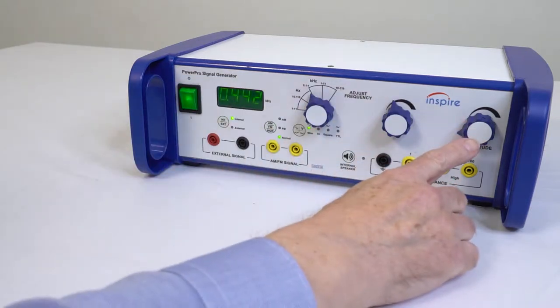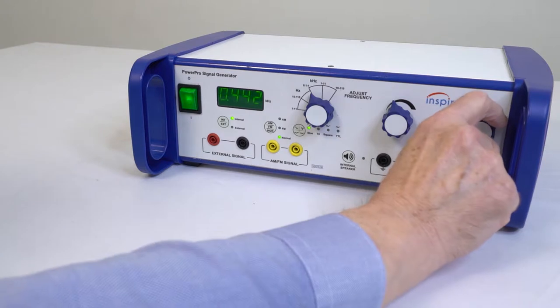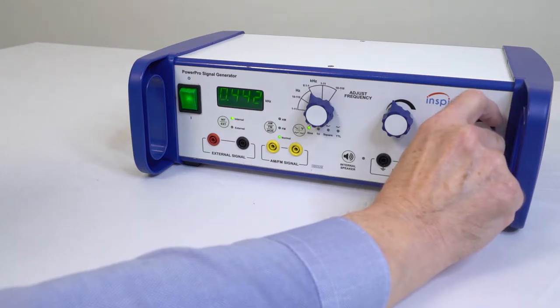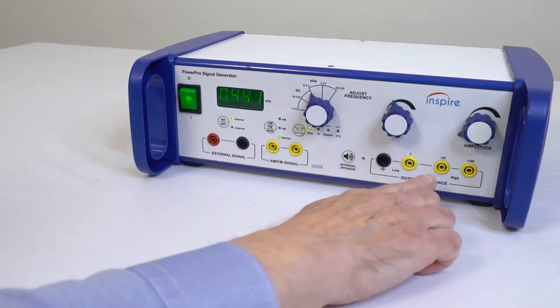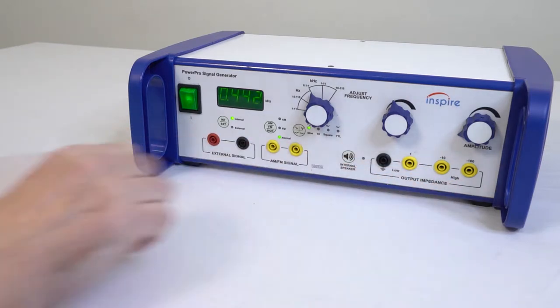The output amplitude is variable up to 10 volts peak to peak and can be attenuated for input to oscilloscopes and electronic circuits. A fixed level TTL signal is also provided over the same frequency range.